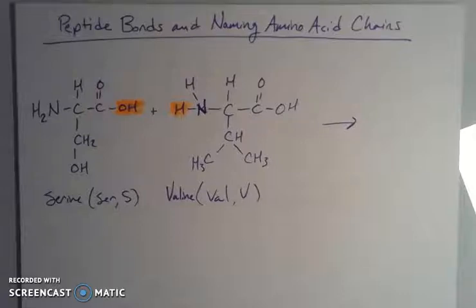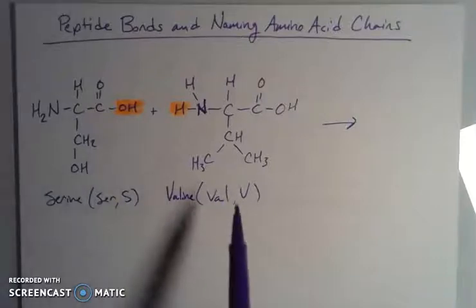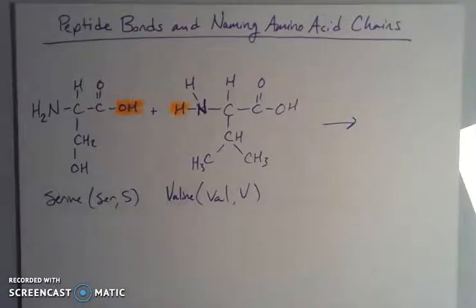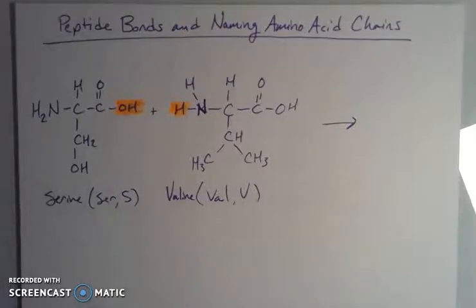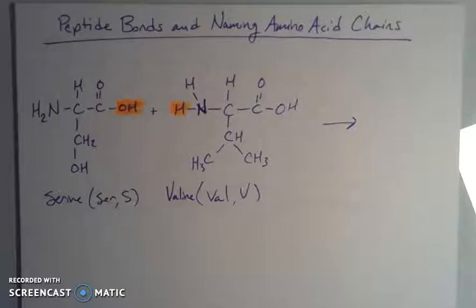The type of bonding that we see when we put together amino acids is called peptide bonds. They're based on amide bonds. When we have strings of amino acids, these are called peptide chains, and they're usually named by how many amino acids we have. So if I have two amino acids, we call it a dipeptide; if I have three, it's a tripeptide, et cetera. In this video, I want to talk about how we bond together amino acids and how we name those peptide chains.